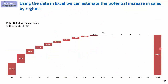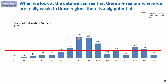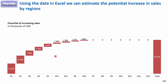We can do the same for the share approach — showing current share in local markets, for example R8 at 58% and R9 at 55%, with the average indicating where below-average markets should move. The waterfall shows the potential of increasing sales: here it's 48 million rather than 38 million, and again the three regions are the biggest contributors. We should probably start implementation in those three regions to get the biggest share of results with the fewest resources.